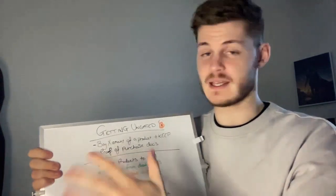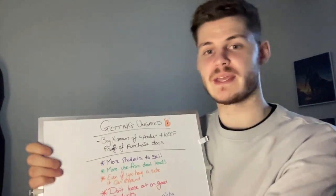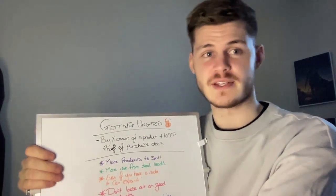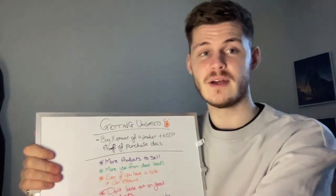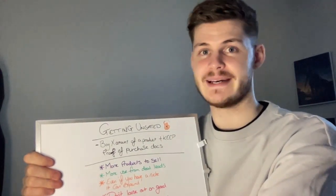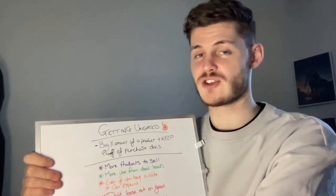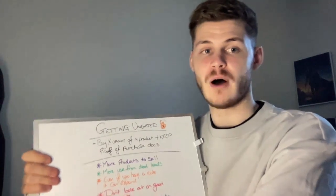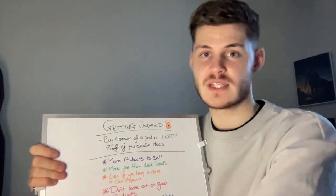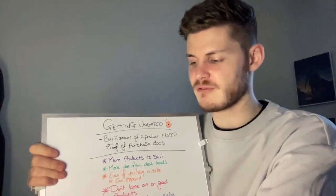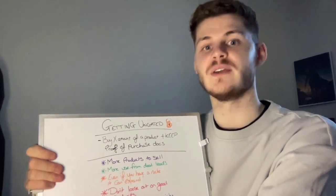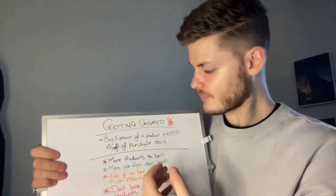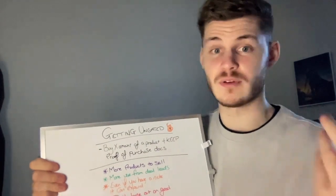When you get started with Amazon there are some open categories — things you can sell straight away. A couple of examples of open categories: toys and games, sports, beauty, homeware, video games and accessories, just to name a few. Those are things you can get involved with straight away, but there are lots of categories that you will also need to get ungated in. One of the perks of getting ungated is simply that there are more products you can actually sell — full stop.